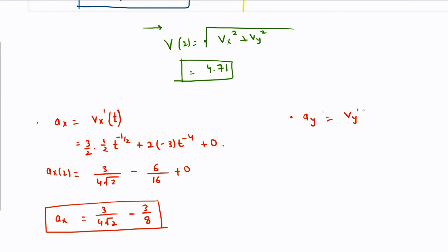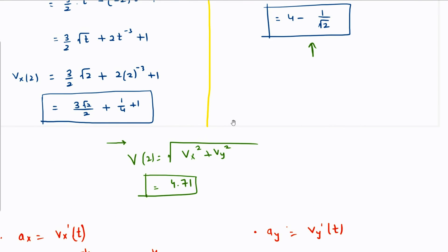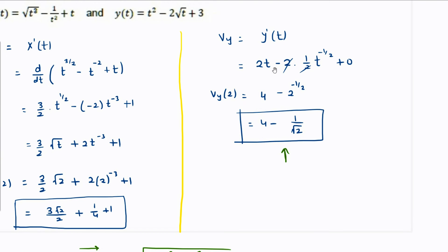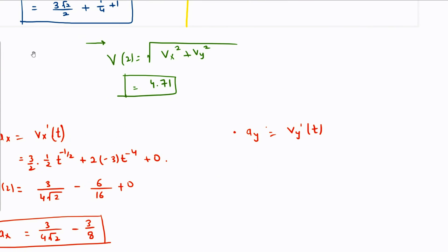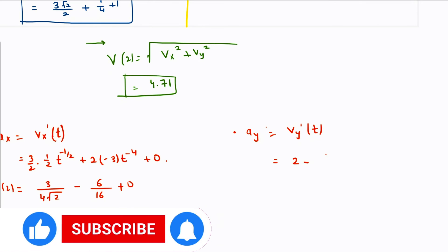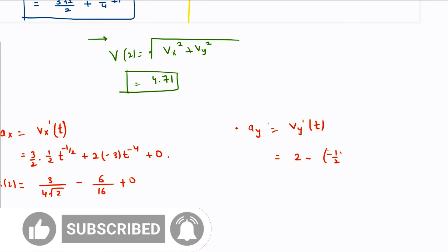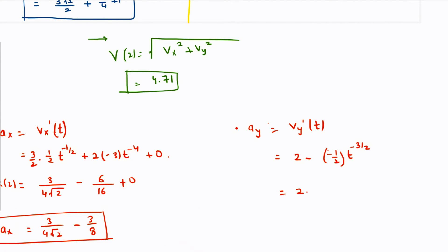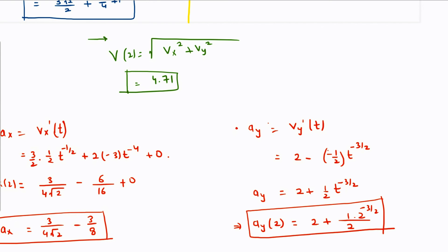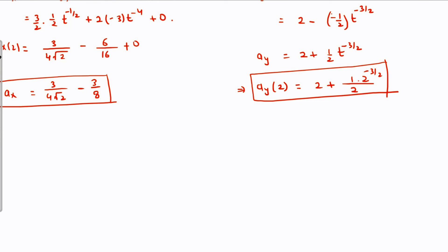Likewise for the y direction, ay is Vy prime of t. Vy is 2t minus t raised to minus 1/2, so differentiating gives 2 minus 1/2 times t raised to minus 3/2. The value of ay at t equal to 2 is 2 plus 1/2 times 2 raised to minus 3/2.